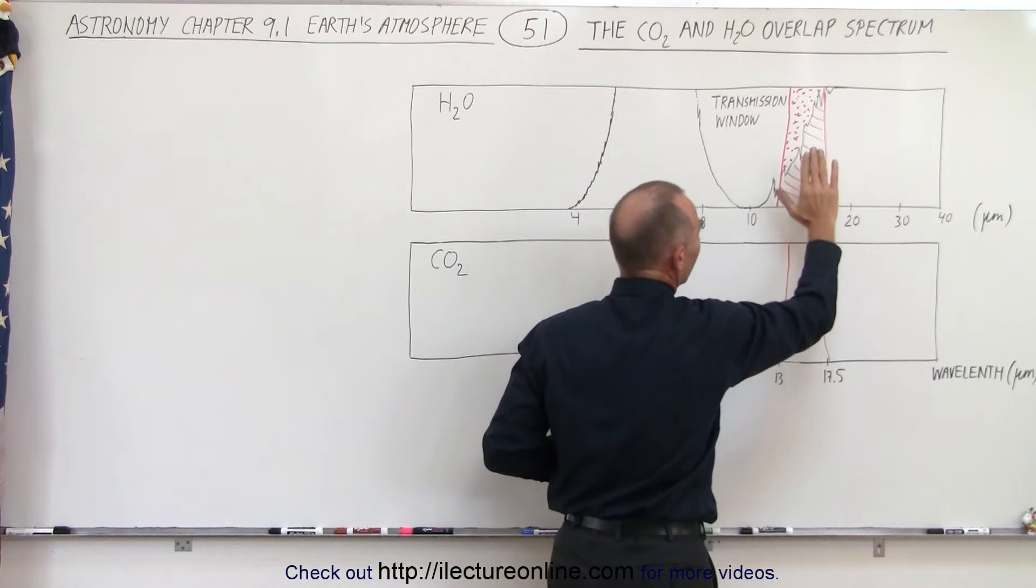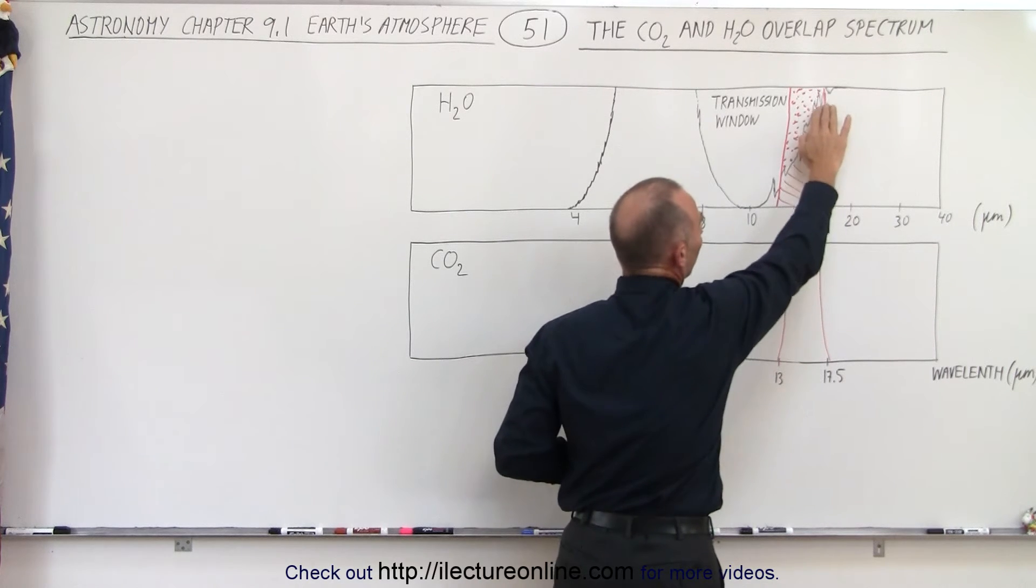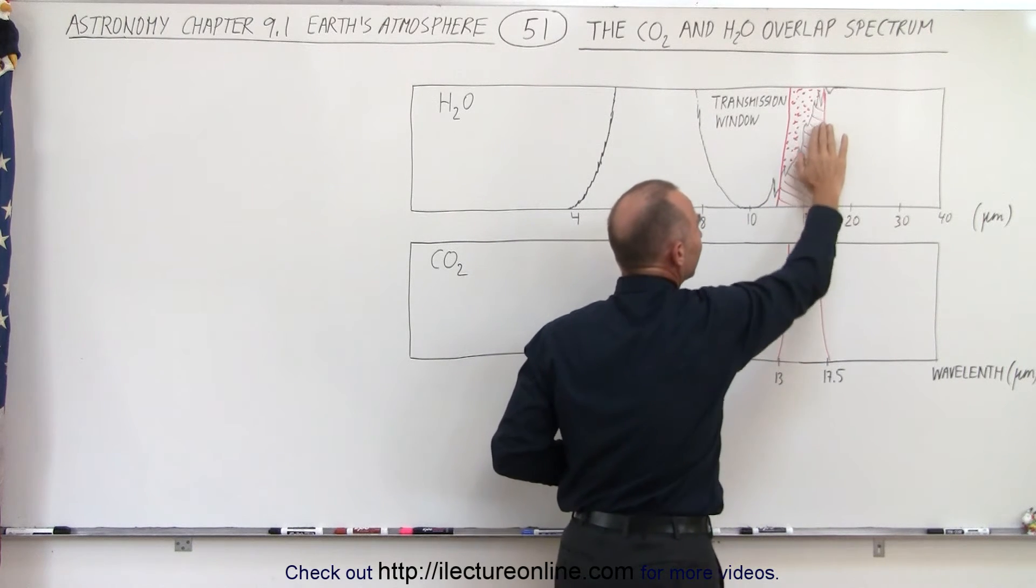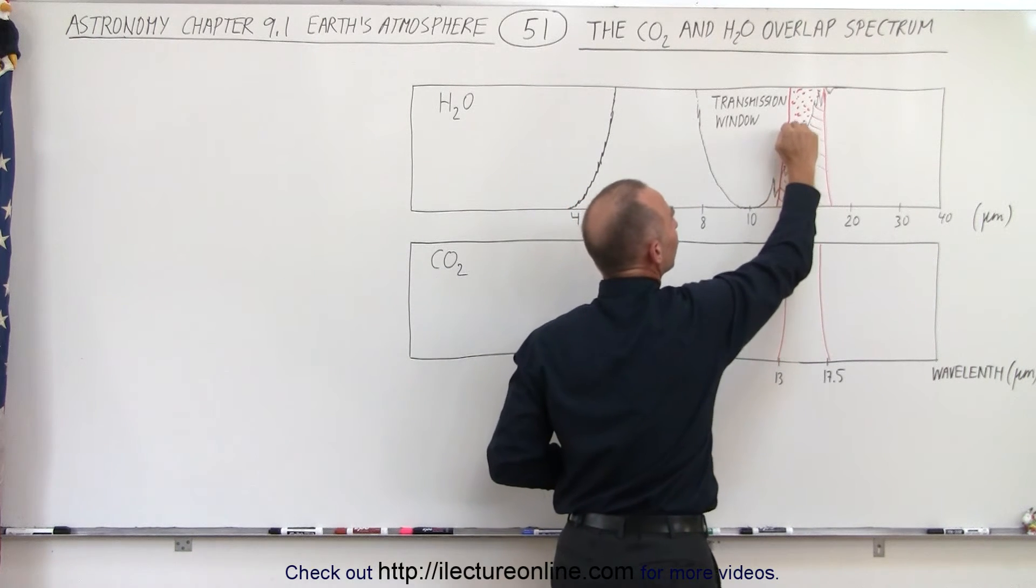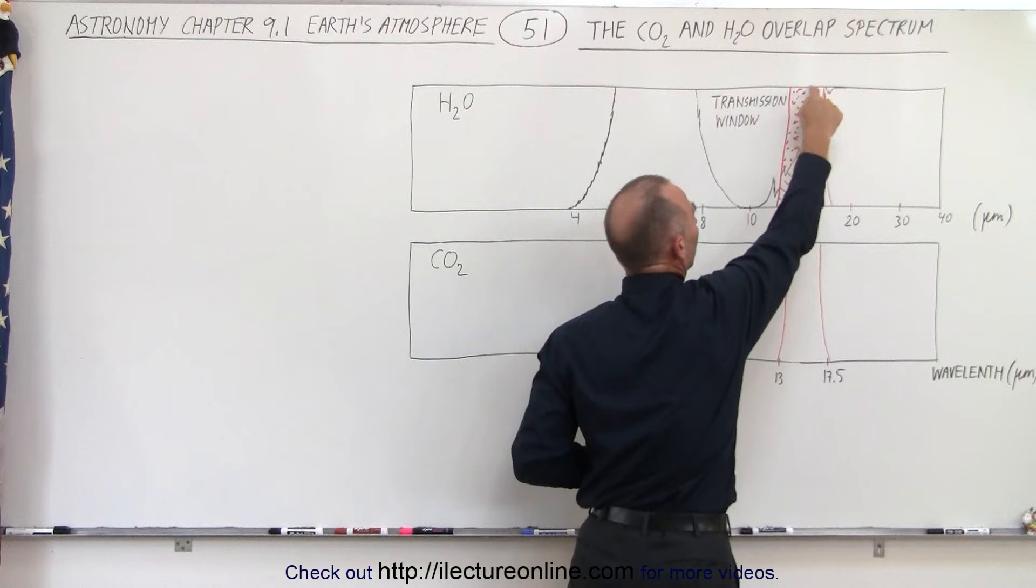So basically if carbon dioxide wasn't available, water vapor would already absorb these wavelengths right here. But the rest of it would get transmitted into space if it wasn't for carbon dioxide.